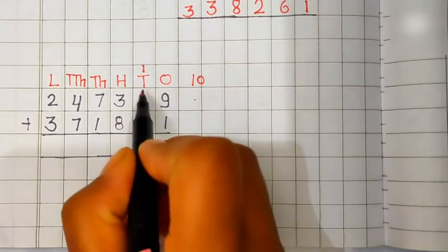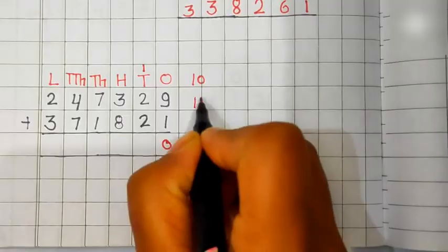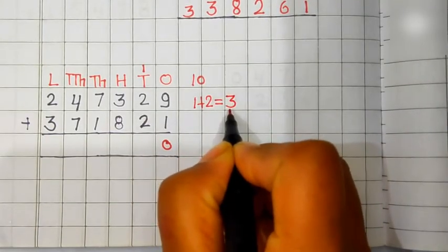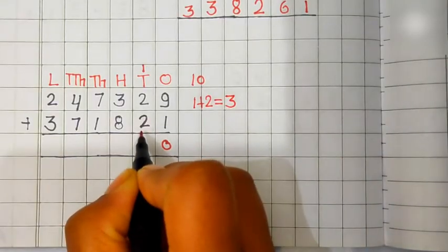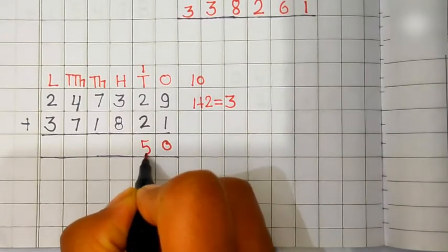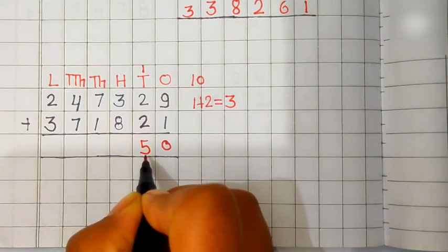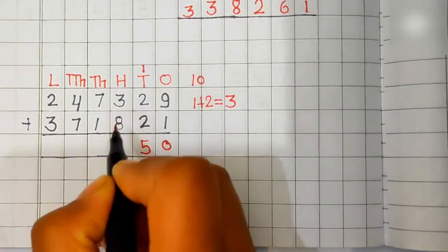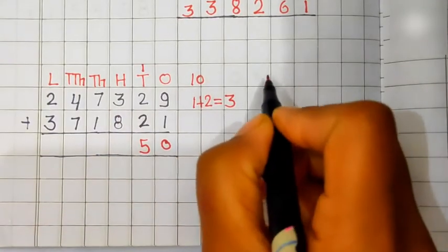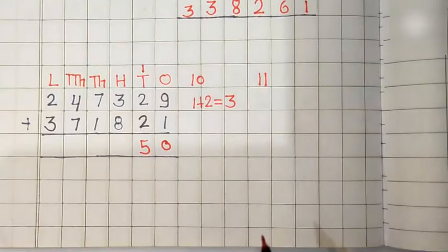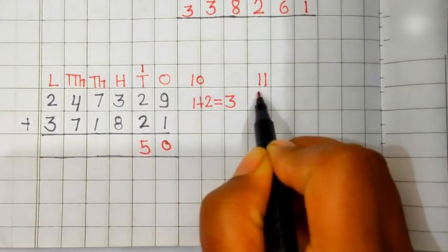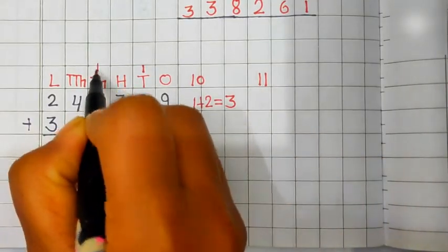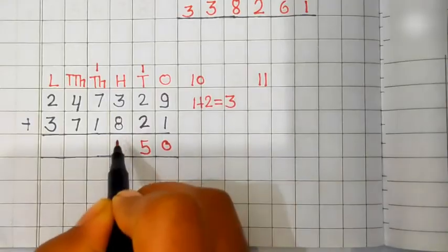Add the digit at 10 place. 1 carry plus 2 is equal to 3. 3 plus 2 is equal to 5. Answer is 5. Then let's add the digit at 100 place. 3 plus 8 is equal to 11. 11 is a two-digit number. We will carry 1 to the 1000 place and 1 comes in the answer.